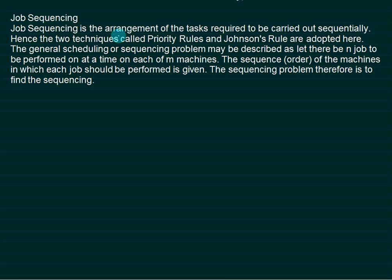The arrangement of tasks required to be carried out sequentially uses two techniques called priority rules and Johnson rules. The general scheduling or sequencing problem involves n jobs to be performed, one at a time, on each of m machines. The sequence or order in which each job should be performed on each machine is given, and the sequencing problem is to find the best possible sequence.